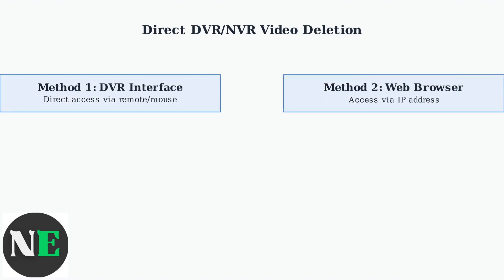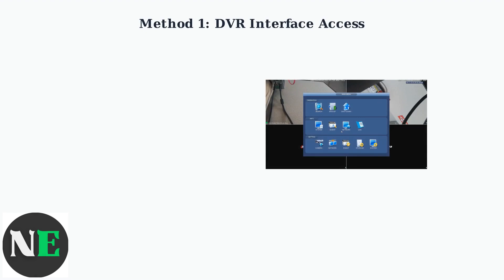This feature saves time when managing large amounts of recorded footage. Besides using the mobile app, you can delete videos directly from your Swan DVR or NVR using two primary methods, giving you more control and access to advanced deletion options. There are two main approaches: using the DVR interface directly with a mouse or remote control, or accessing the system through a web browser using the device's IP address.